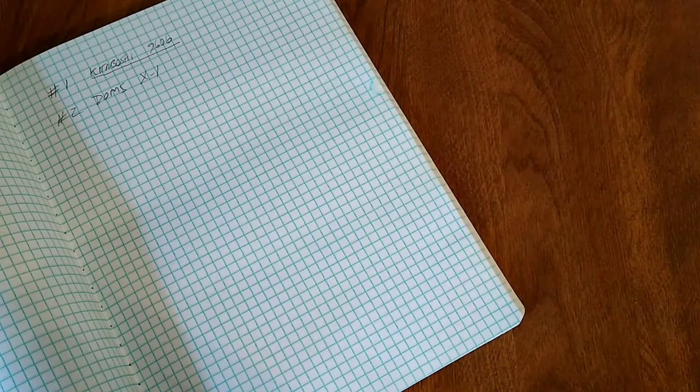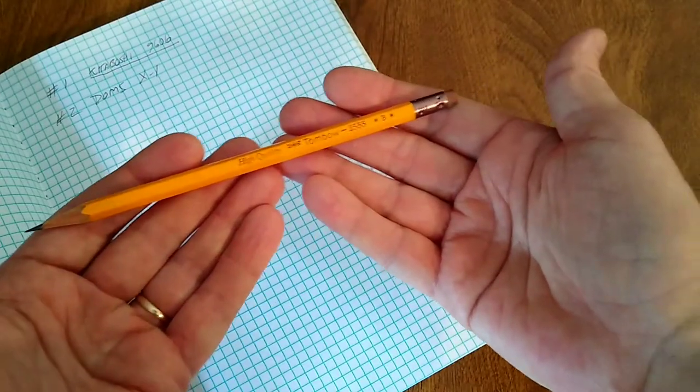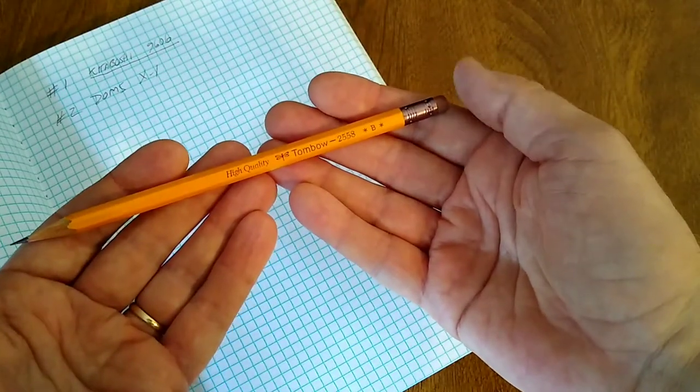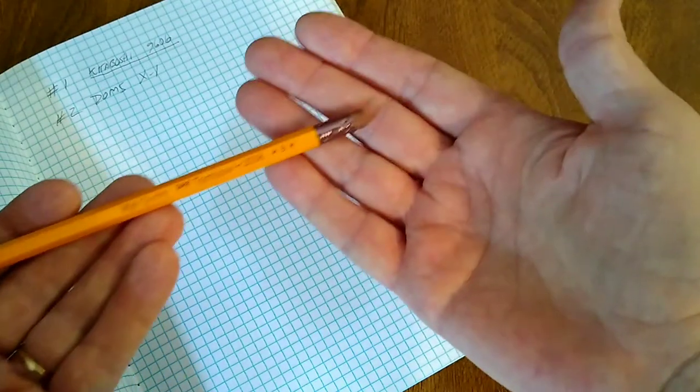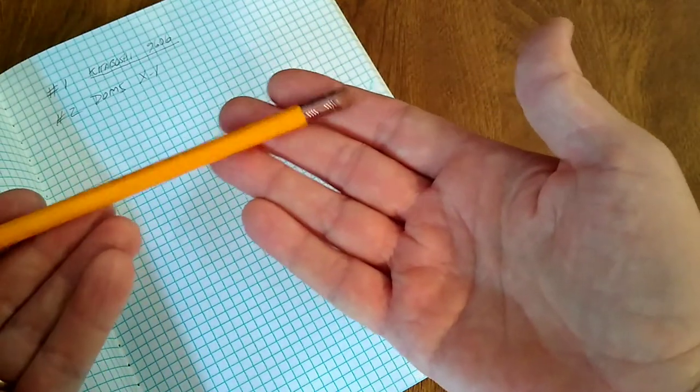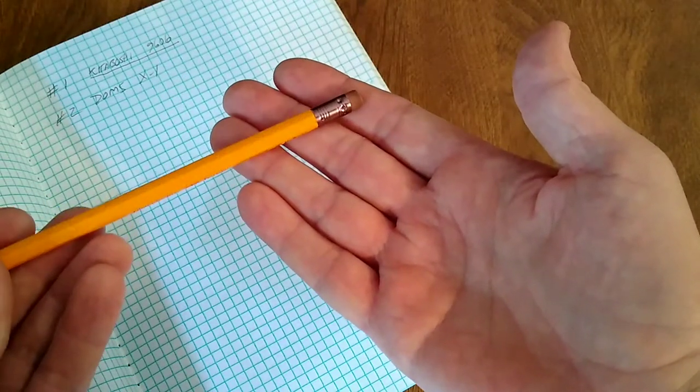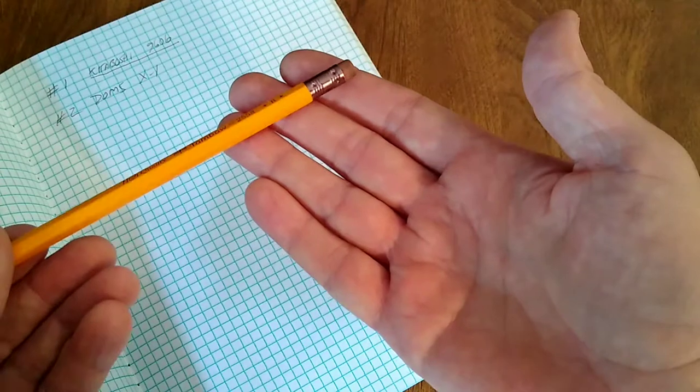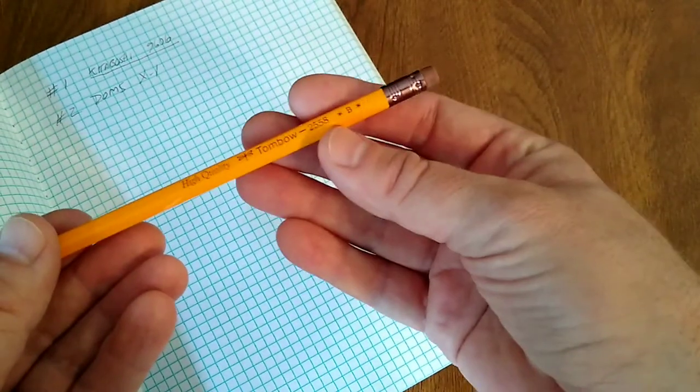Number three, my number three favorite writing pencil comes from Japan again. This one is from Tombow. It's the Tombow 2558, in a B grade, so a little darker than your standard HB. Has a very nice ferrule. Kind of a bronzy rose color. I think it looks really nice next to this gold yellow.